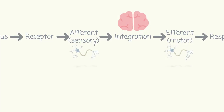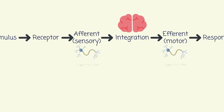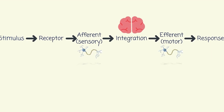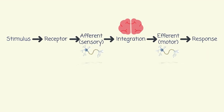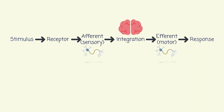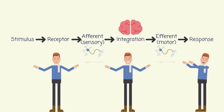So in brief, the receptors responded to the stimulus and sent it toward the brain by afferent or sensory neurons. The brain did the analysis and sent a message to muscles by efferent or motor neurons for proper response. Since you were aware of all these processes, we categorize it as the somatic nervous system.